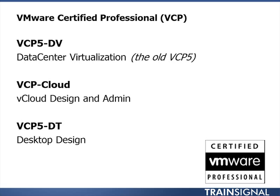There are now three different types of VCP. There's the VCP DV on Data Center Virtualization, which covers VMware vSphere, ESXi, and vCenter. There's the VCP on Cloud, covering vCloud design and administration. And there's the VCP on desktop virtualization, specifically desktop design. Importantly, in order to achieve a VCP Cloud or VCP DT, you first need to achieve the VCP DV. That VCP DV is really the bottleneck for all certifications — you must have it to get the other VCPs and to get a VCAP, which in turn is required to achieve the VCDX.